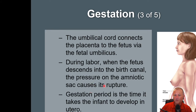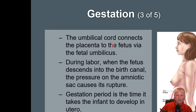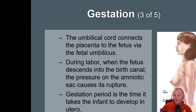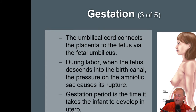Forty weeks of labor divided into three trimesters. The umbilical cord connects the placenta to the fetus. When we were talking about abrupto placenta, a short umbilical cord was one of the risk factors. The gestation period is the time it takes the infant to develop in utero.